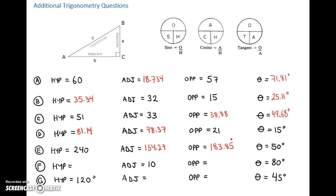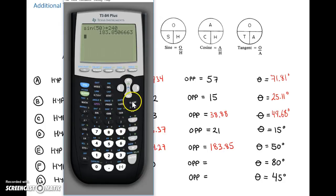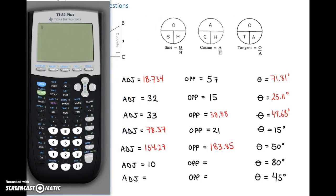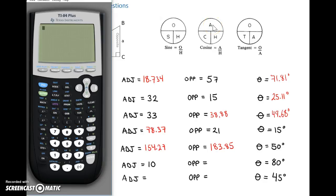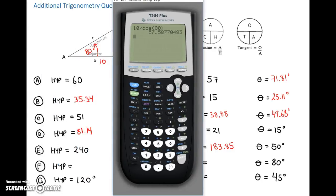Next one — we have the adjacent at 10 and a really steep angle of 80 degrees. Let's do the hypotenuse first. Using adjacent and angle with cosine, the hypotenuse is the adjacent over cos of the angle — so 10 divided by cos of 80. We find that to be 57.587, so we'll say 57.59.